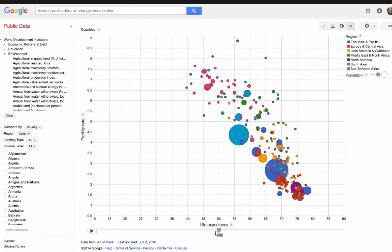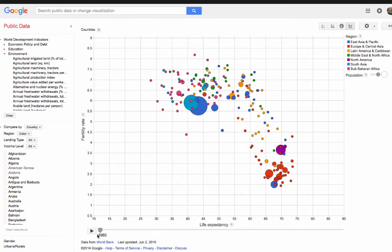In this example, I'm looking at the life expectancy across countries against the fertility rate. And what I really like is that you can actually slide the bar across the bottom from left to right and see the data change over time.